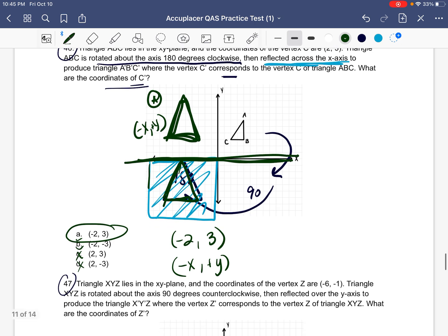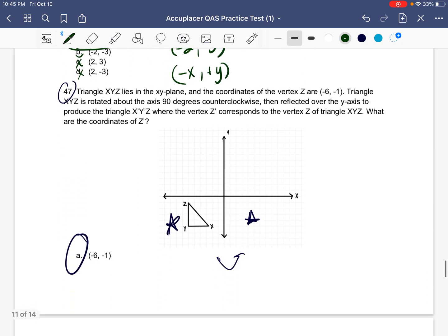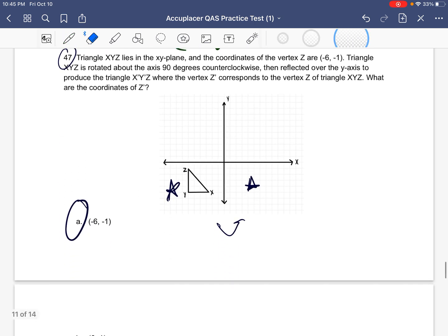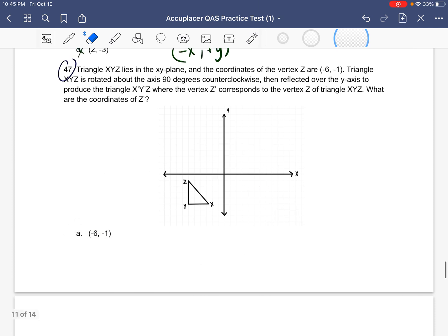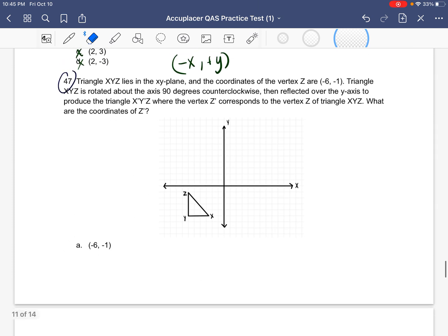We're going to go ahead and do another problem that's similar to this. Now that I've explained it, it'll be much simpler. So let's go ahead and look at question number 47. It says triangle XYZ lies in the xy plane, and the coordinates of the vertex Z are (-6, -1). The triangle is rotated about the axis 90 degrees counterclockwise, then reflected over the y-axis to produce a new triangle. What are the coordinates of Z'?